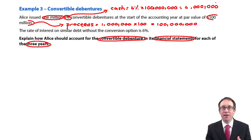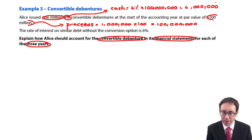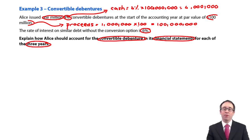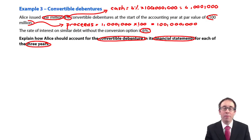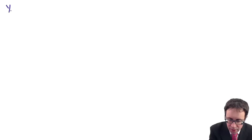To work out the present value of the future cash flows and determine the value of the financial liability, we use the market rate on similar debt without the conversion option, which is 6%. So if we were to borrow 100 million on the market, we would be paying 6% interest. I'm going to focus on the financial statements for year one and look at the statement of financial position and the statement of profit or loss.